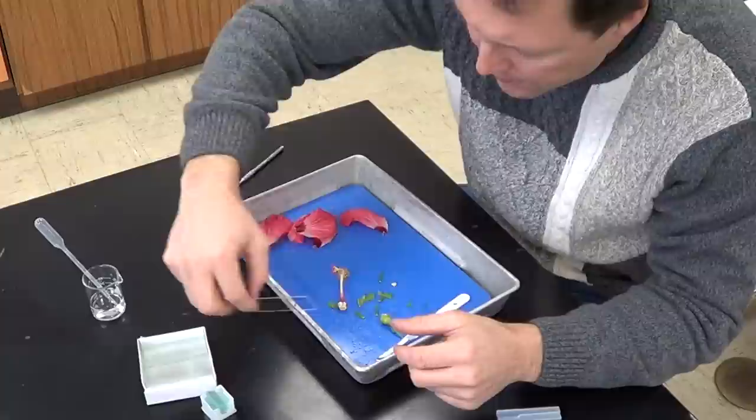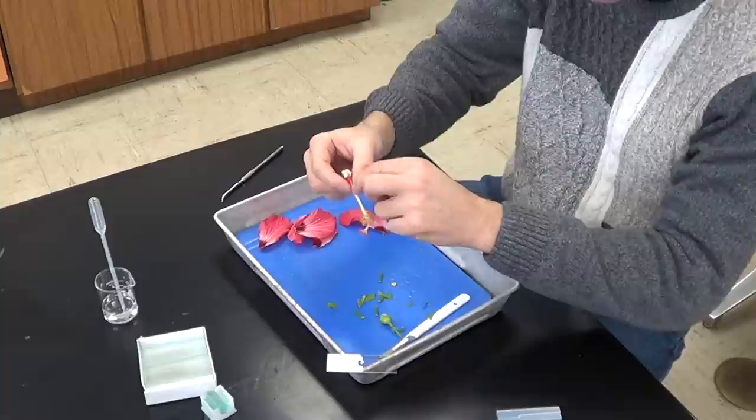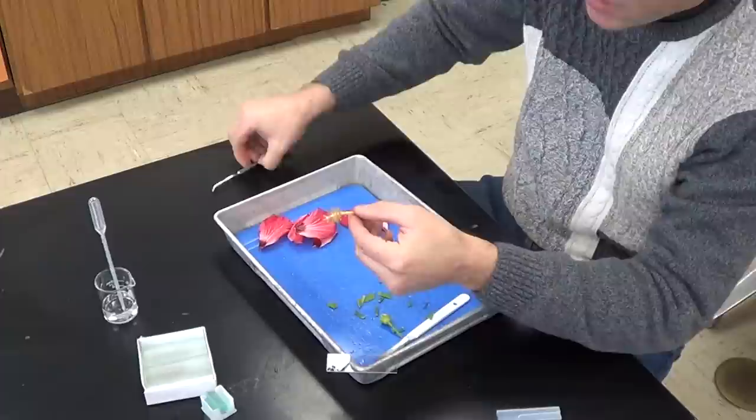The next thing we're going to do is take another clean glass slide, and now we're going to make a wet mount. I'm going to take a drop of water, put a single drop of water on this glass slide. There we go, right in the center.